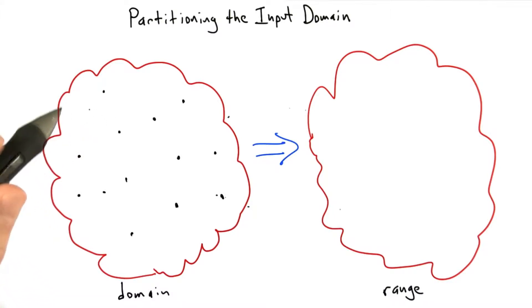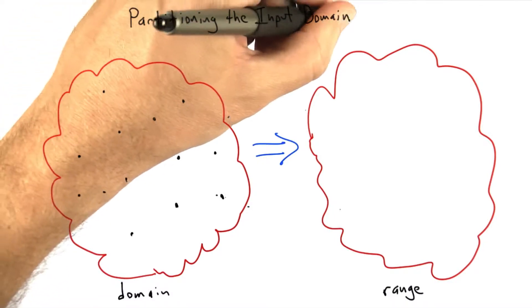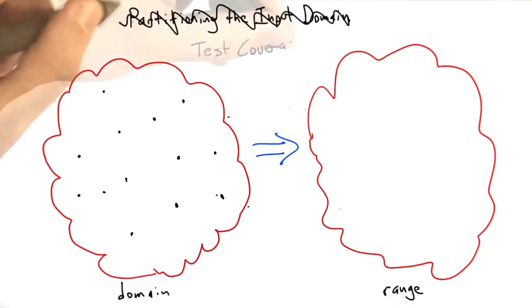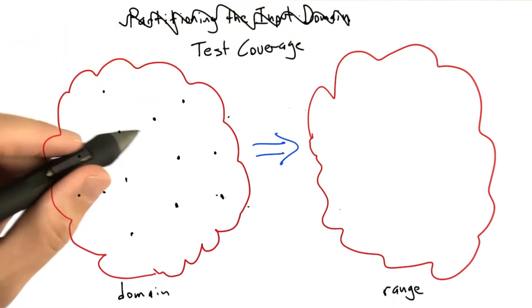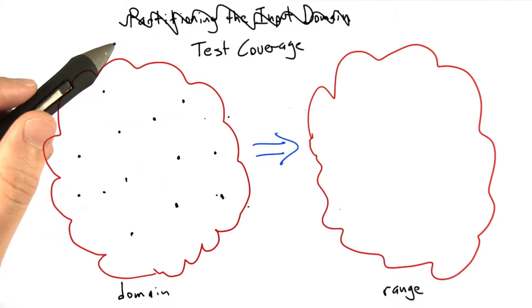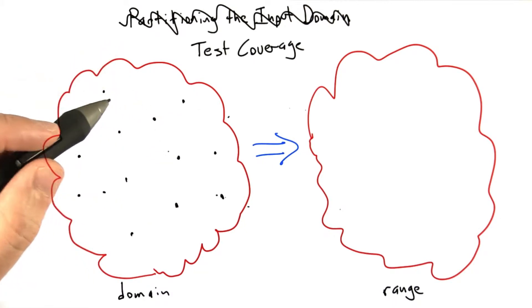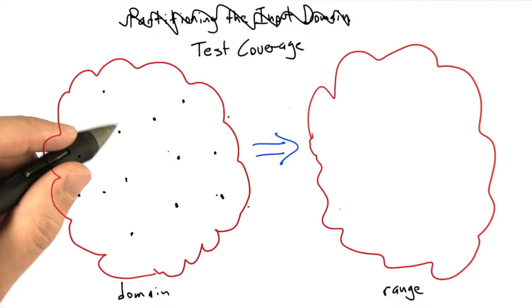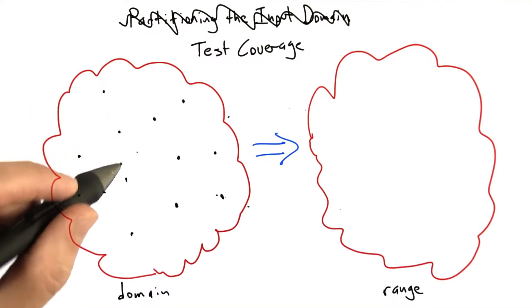And so in practice, what we've ended up with is not this idea of coming up with a good partitioning for the input domain, but rather the notion of test coverage. And what test coverage is doing is it's trying to accomplish exactly the same thing that partitioning was accomplishing, but it goes about it in a different way. Test coverage is an automatic way of partitioning the input domain based on observed features of the source code. So let me say what I mean.